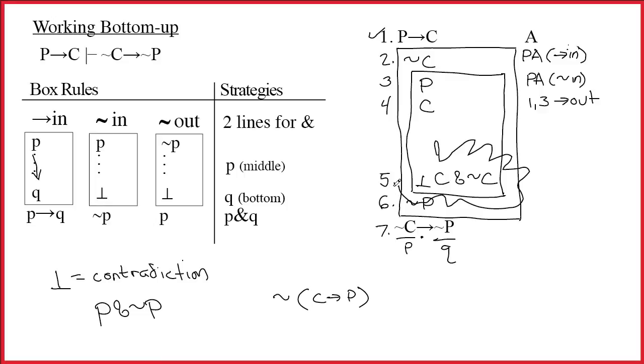6 and 7 are the conclusions that I have proved. And all I need to do is write in their justifications. I was having too much fun drawing my explosion, and I see that I forgot to put the justification for line 5. What's it supposed to be? Well, we just took 2 and 4 and put them together. So all it is is 2, 4, ampersand in.